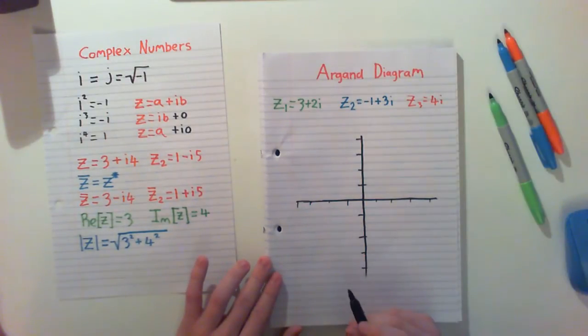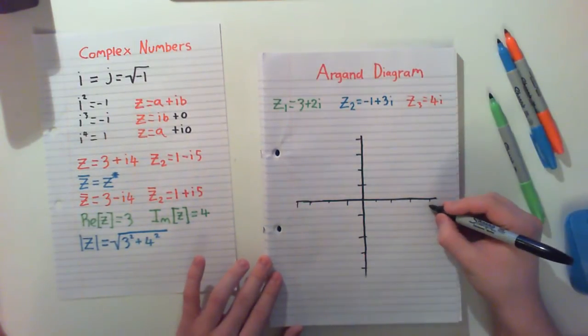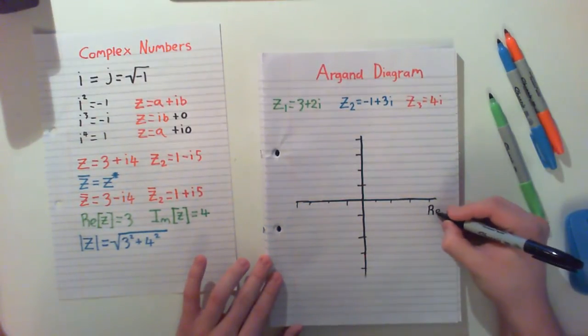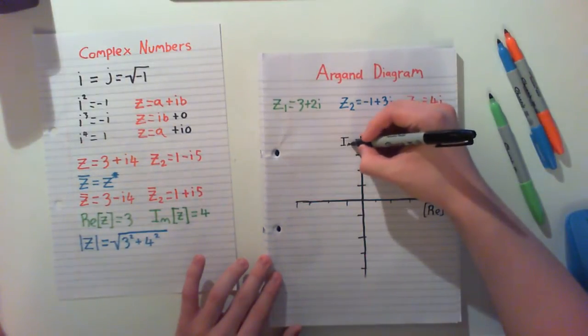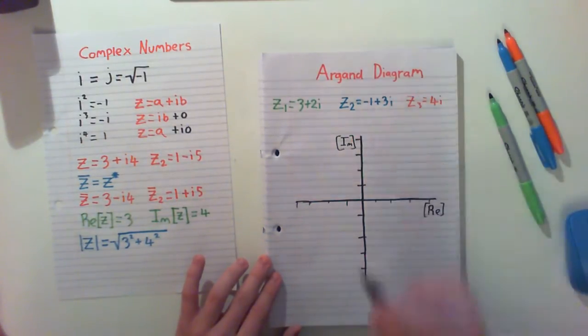So first we're addressing the Argand diagram. This is our real axis, and this up here is our imaginary axis.